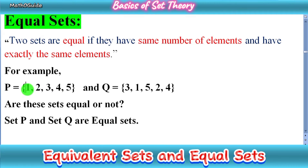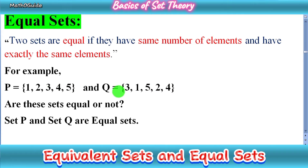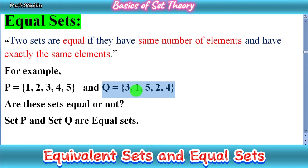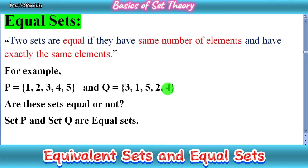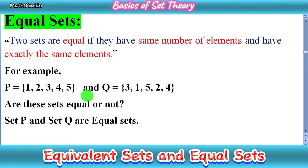Let's discuss an example. Set P equals {1, 2, 3, 4, 5} and set Q equals {3, 1, 5, 2, 4}. First, check the number of elements — both sets have five elements, so the first condition is fulfilled. Second, check if the elements are exactly the same. Both contain the first five natural numbers, just in different order. In sets, order doesn't matter, so set P and set Q are equal sets.